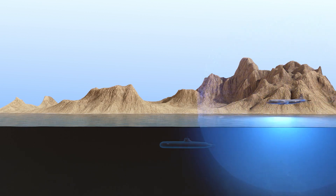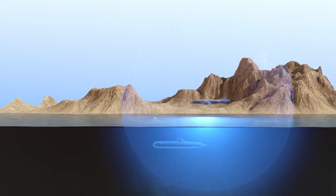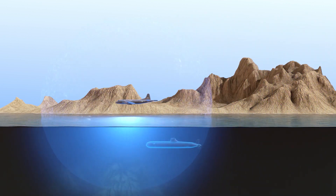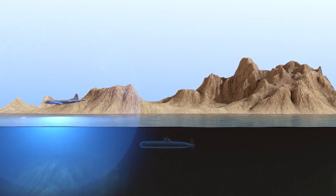Since the submarine is underwater it can't be seen from the air visually, and our sensor enables an operator to detect the submarine that's under the water. As the sensor moves above the submarine, it detects that disruption in the Earth's magnetic field, and the operator then knows that there's potentially a submarine underneath the sensor.